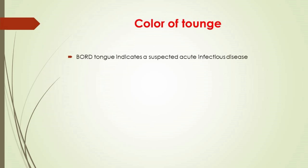Regarding tongue color diagnostics: a red/scarlet tongue indicates a suspected acute infectious disease; purple signals possible disorders in the circulatory and respiratory system; white-red is a sign of the threat of constipation; yellow indicates serious disorders in digestion; grey speaks of chronic stomach and intestinal diseases; grey plaque may indicate increased acidity. If the tongue is red from the sides, liver disorders are possible; too bright a tongue indicates possible exhaustion of the body.